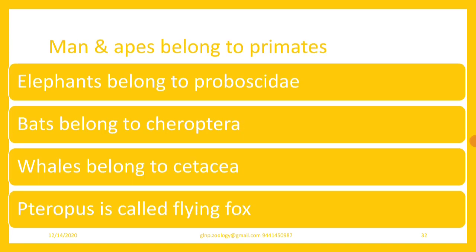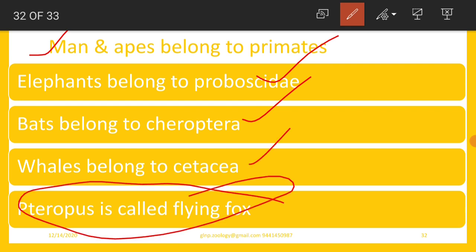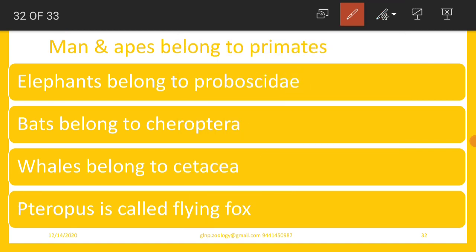Eutherians are the advanced mammals, including human beings, and this group includes many orders. Primates is the order under which man and apes are included. Proboscidea includes elephants. Chiroptera includes bats, which are called flying foxes. Whales belong to the order Cetacea. Pteropus is also called a flying fox and is nothing but a bat. Bats exhibit echolocation.